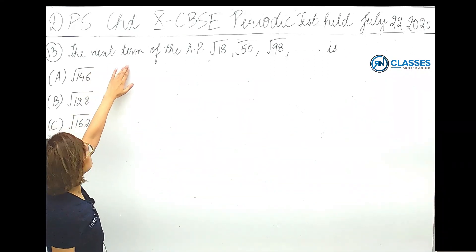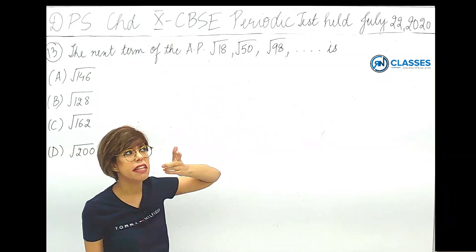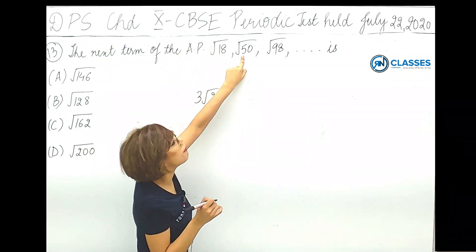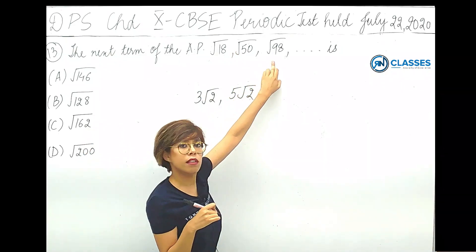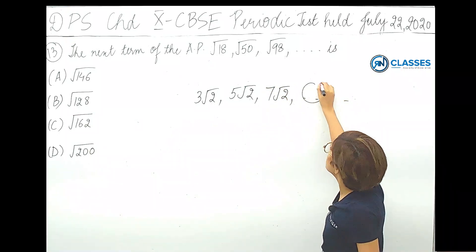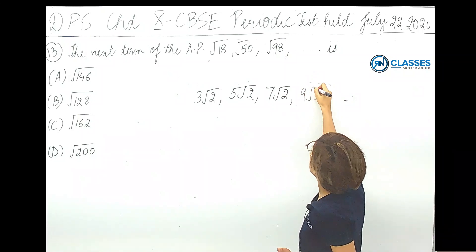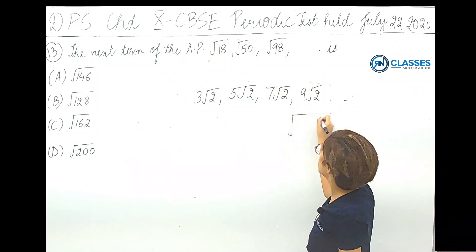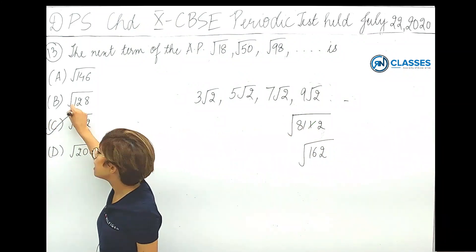The next question: find the next term of the AP with terms root 18, root 50, root 98. Simplifying: root 18 equals 3 root 2, root 50 equals 5 root 2, root 98 equals 7 root 2. This is an AP with common difference 2 root 2, so the next term is 9 root 2, which equals root 162. Option C is correct.